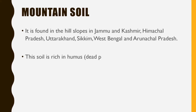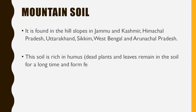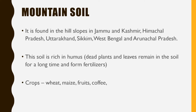This soil is rich in humus. Humus is the dead plants and leaves which remain in the soil for a very long time and form fertilizers. When a plant dies or dead leaves fall on the ground and remain in the soil for a long time, they decompose, and that decomposed material is used as fertilizer. The crops which can be grown on mountain soil are wheat, maize, fruits, coffee and tea.